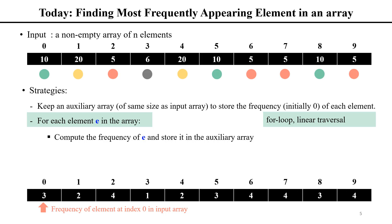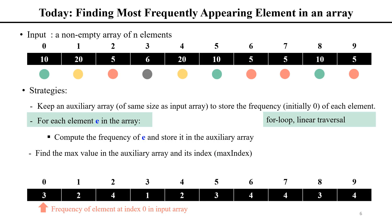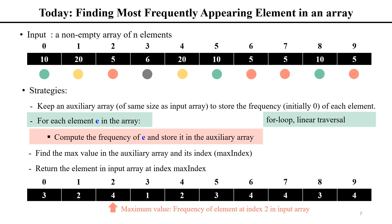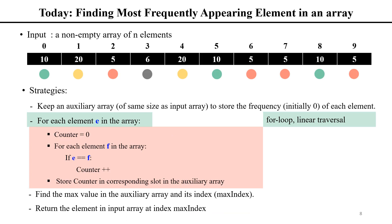After the for loop, the frequency array contains the frequency value of each element in the input array. Then we only need to find the maximum value in the auxiliary array and its index — call it max index. This max index tells us which slot to look at in the input array to get the actual element. With that information, we return the element in the input array at max index. To compute the frequency of each element, we keep a counter variable and go through the input array. Every time we see the element, we increment its counter by one. After this inner for loop, we store the counter value in the corresponding slot in the auxiliary array.